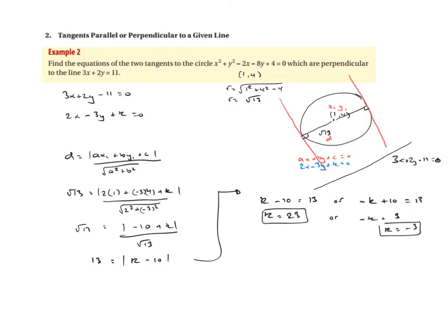We haven't quite finished because the question asks for the equations of the two tangents. We substitute our k values back in: the first equation is 2x - 3y + 23 = 0 and the second is 2x - 3y - 3 = 0. Those are the two tangent equations perpendicular to the line 3x + 2y = 11.